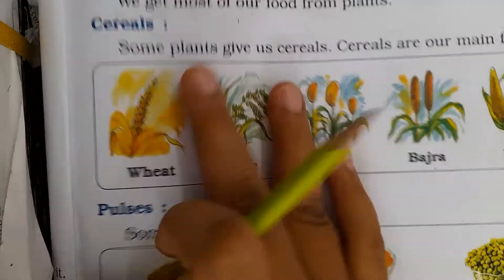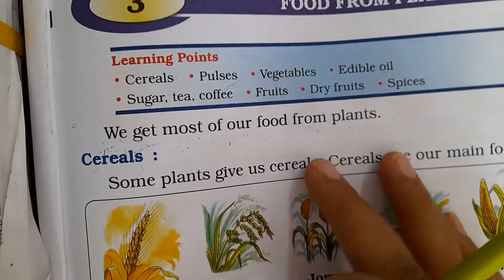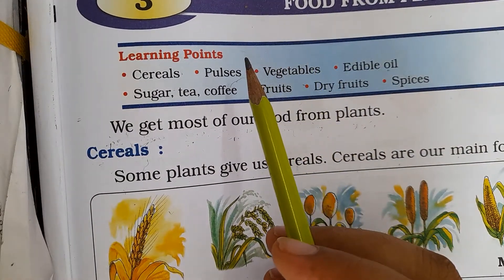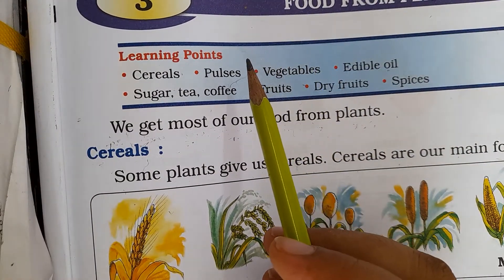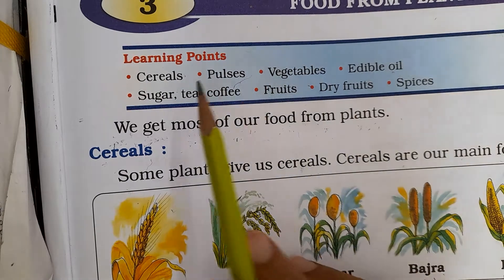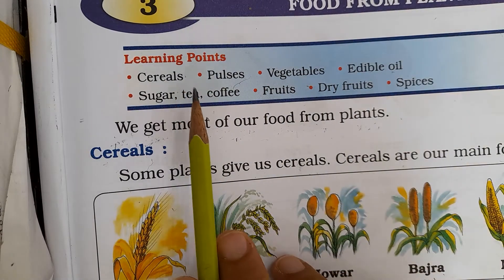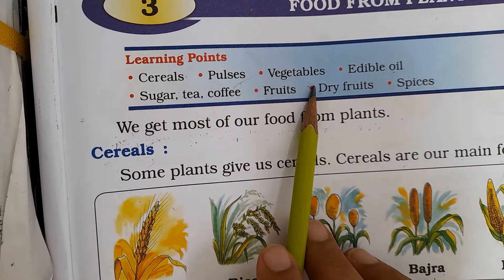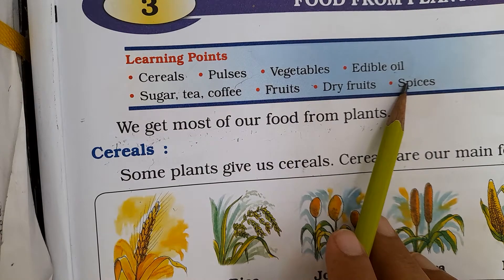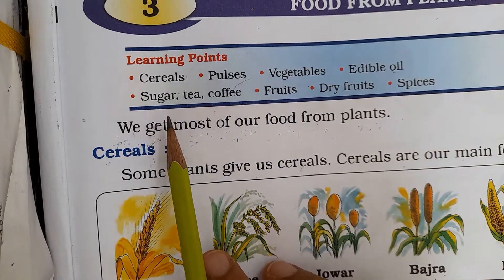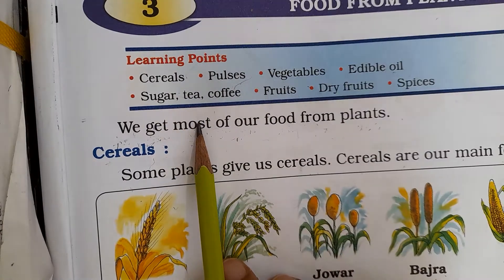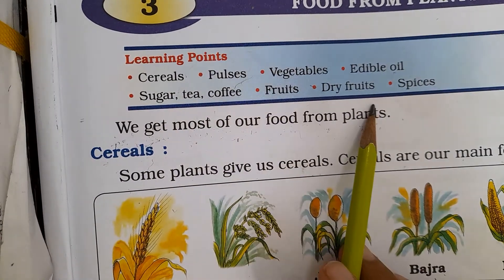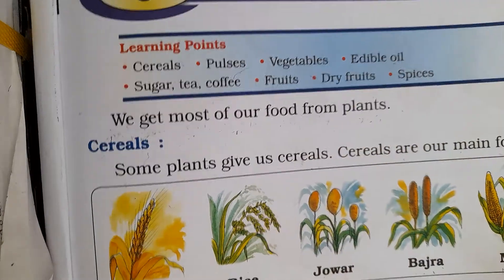The cereals we use daily, like the main food course. So cereals, pulses, vegetables, edible oil, sugar, tea, coffee, fruits, dry fruits, spices — they all come from plants.